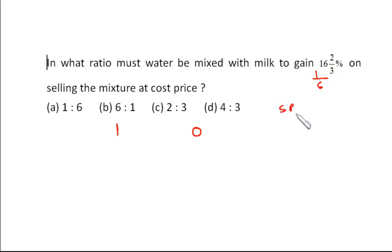The selling price to cost price ratio is 1 plus 1/6, that is 7/6. Now if the selling price of the mixture is 1 rupee, then the cost price will be 6/7.